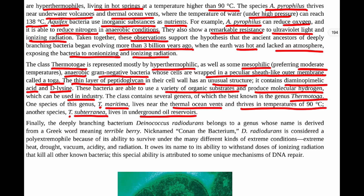Again, these are things we find in extreme conditions, very different areas where we wouldn't think life is able to survive — underground oil reservoirs and temperatures near thermal ocean vents. Some are mesophilic, preferring moderate temperatures, but many can survive ionizing radiation and UV light and conditions that many other bacteria are unable to handle. Finally, the deeply branching bacterium Deinococcus radiodurans belongs to a genus whose name is derived from a Greek word meaning 'terrible berry,' also nicknamed Conan the Bacterium.